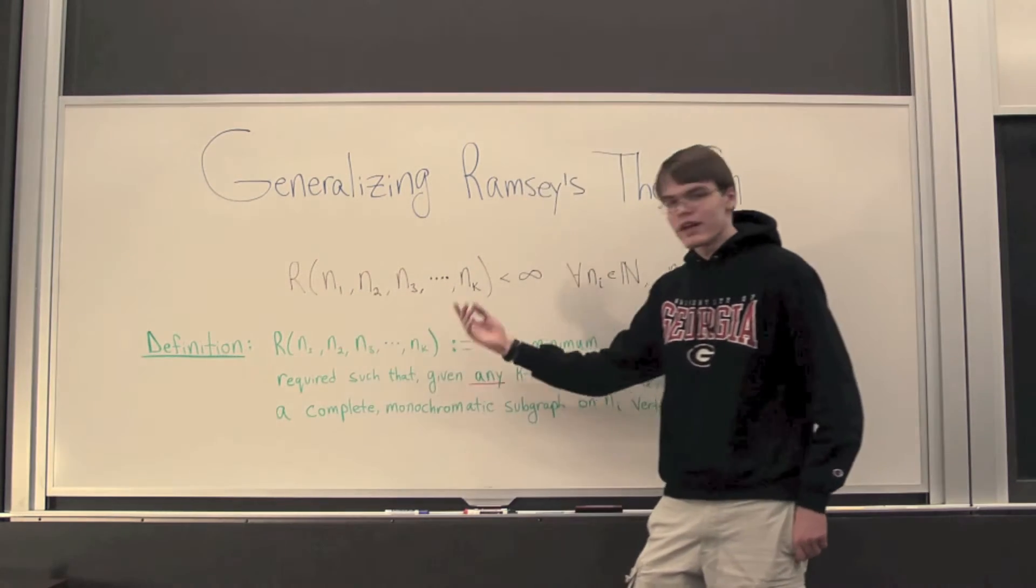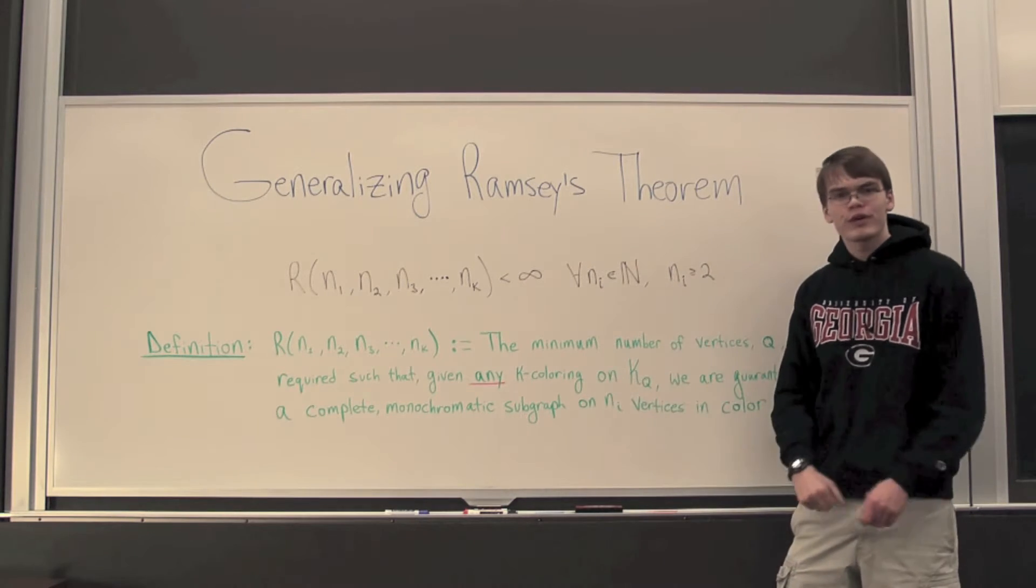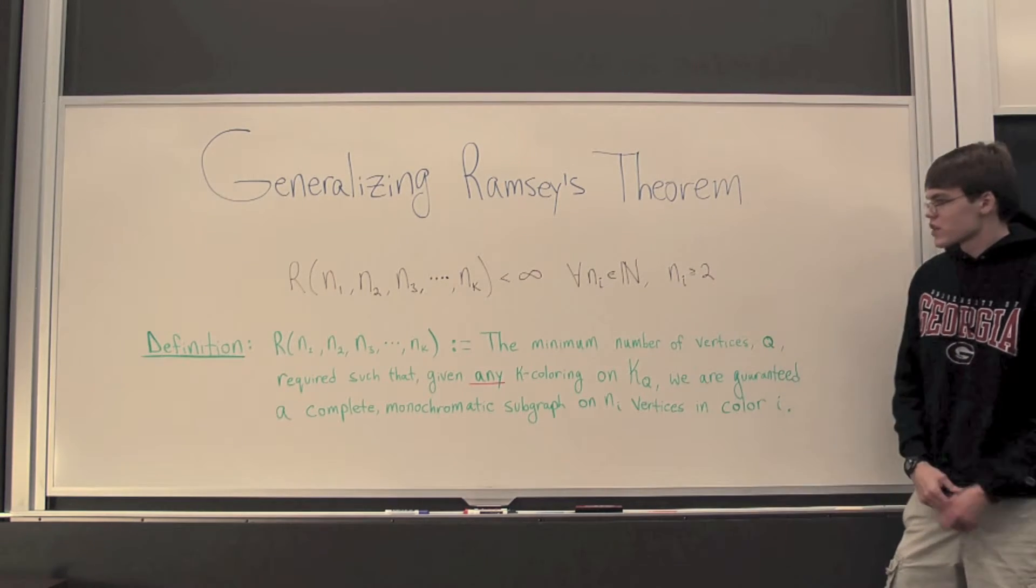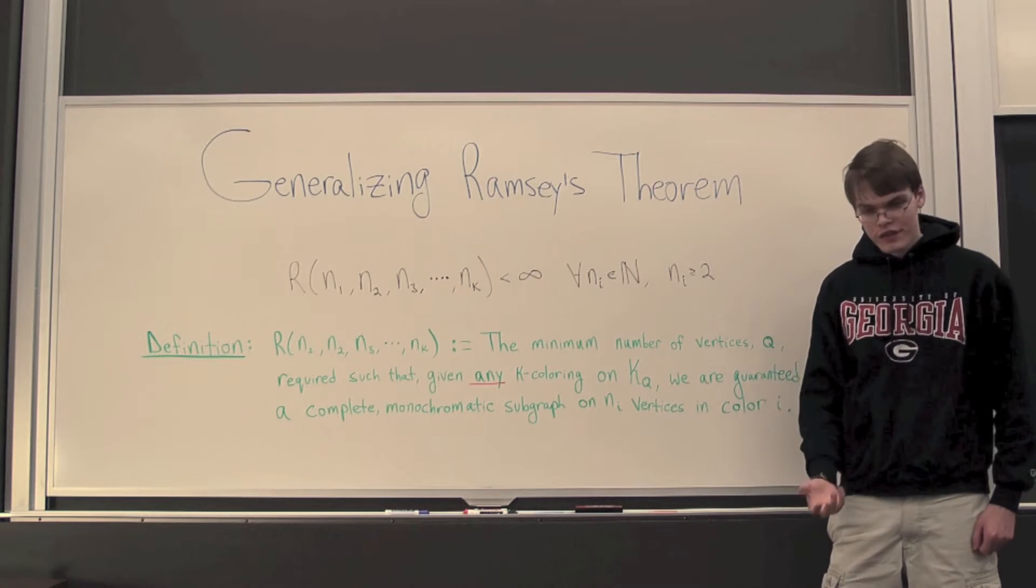So, r(n₁, n₂, ..., nₖ) is going to be defined as the minimum number of vertices q, such that given any k coloring on the complete graph of q vertices,